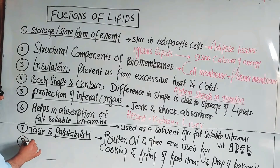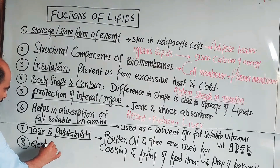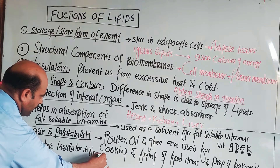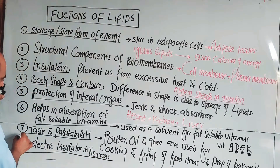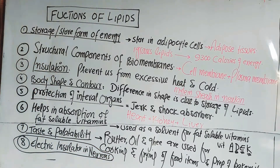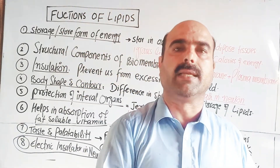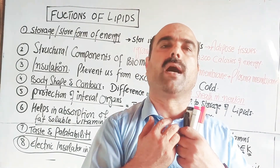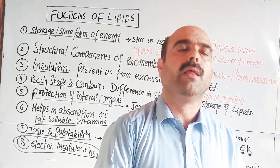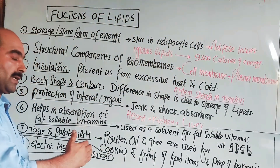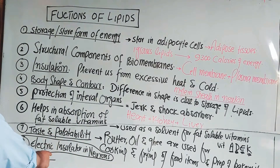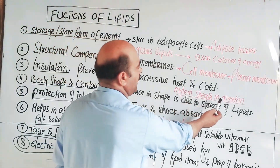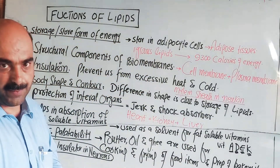The eighth function of lipids is their use as an electric insulator in neurons. Neurons receive and forward electric signals. Sensory neurons, associative neurons, and motor neurons all transmit signals to various body parts. The myelin sheath on neurons provides insulation for these electrical signals.